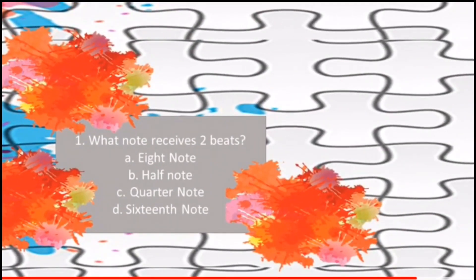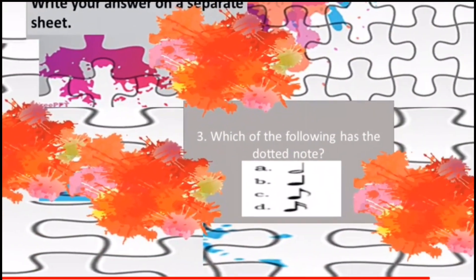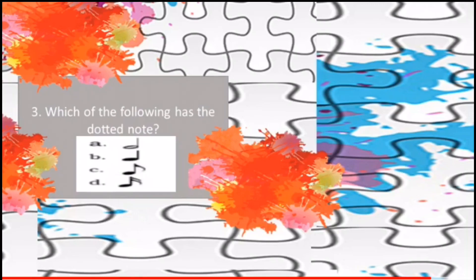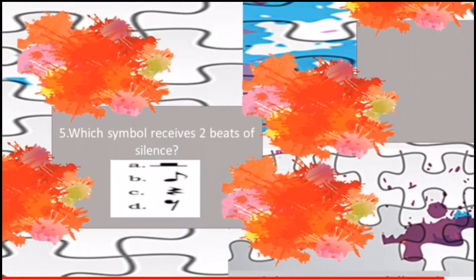Number 1. What note receives two beats? Number 2. Which of the following rests receives four beats? Number 3. Which of the following has the dotted note? Number 4. Which note receives one half of a beat? Number 5. Which symbol receives two beats of silence?